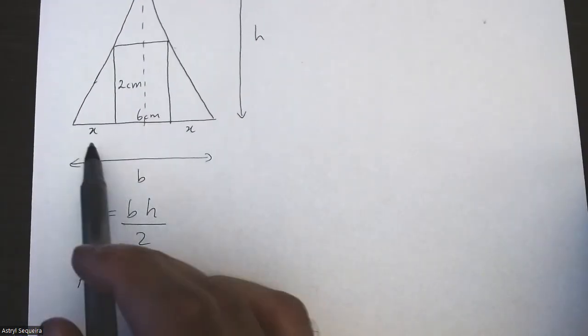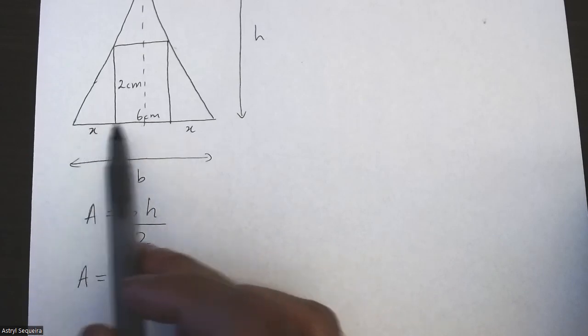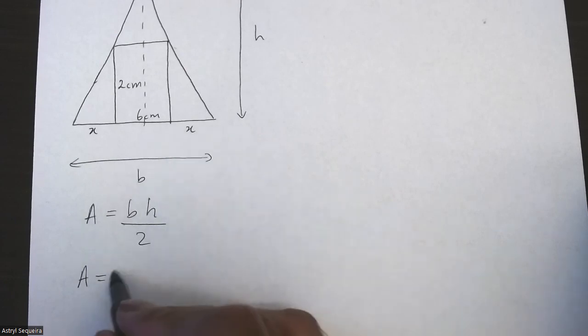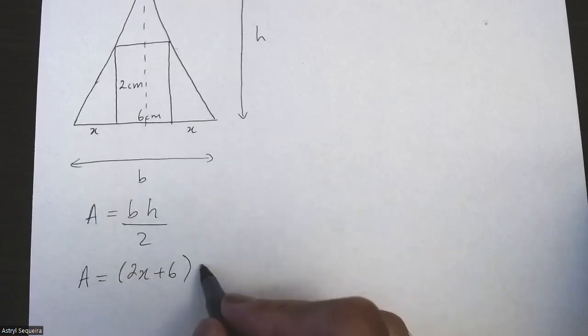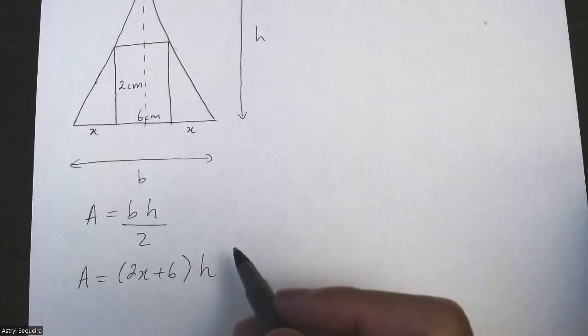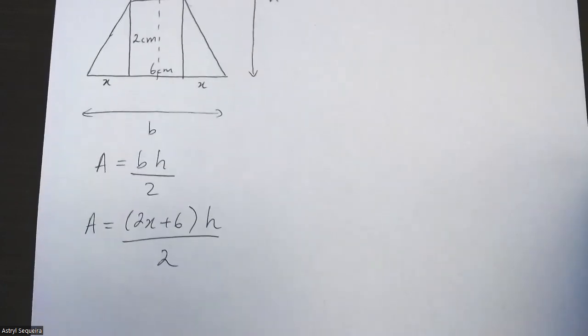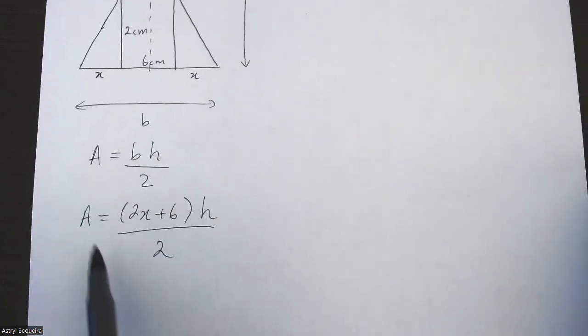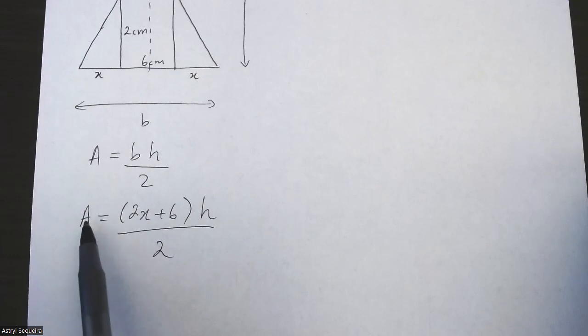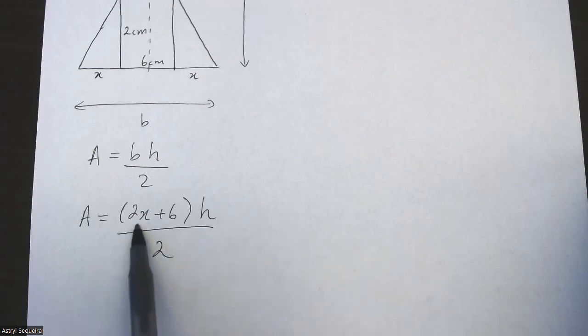So if I do my equation for my area, I know that my base is going to be x plus six plus x, so it's basically 2x plus 6. And I still don't know what my height is, so I'm just going to leave it as h, then I'm going to divide this by two. Now I need to derive this equation, but in order to derive this equation I can only have one variable on this side, so I need to come up with a second equation to get rid of either x or h.